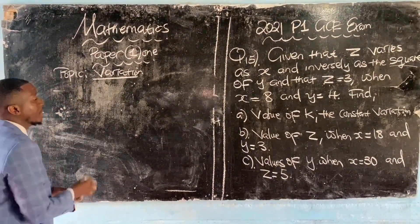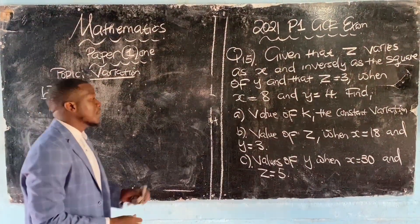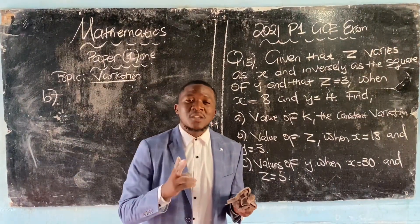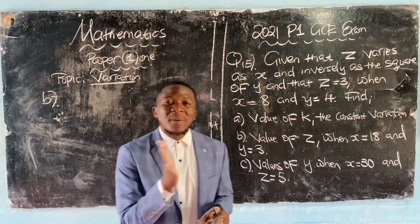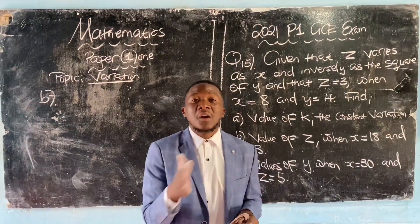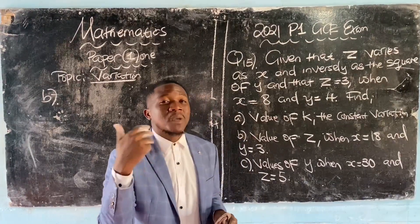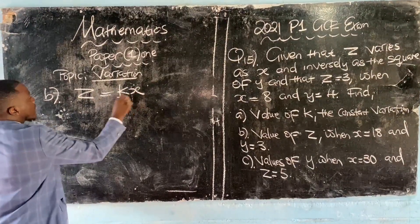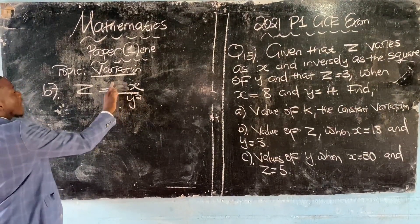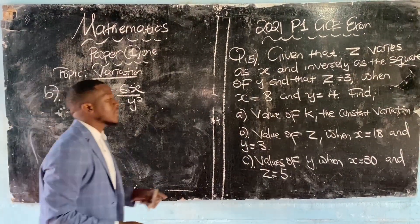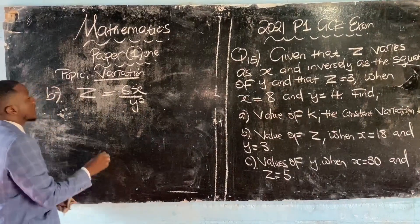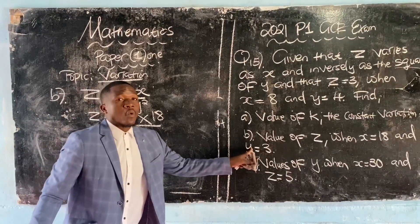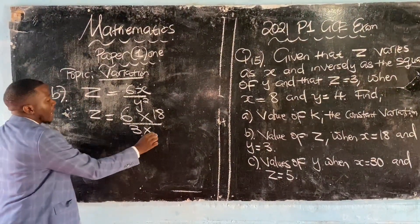On part b, we're finding the value of z when x equals 18 and y equals 3. Go back to your original equation and replace k with 6. z equals 6x over y squared. z equals 6 multiplied by 18 over 3 times 3.